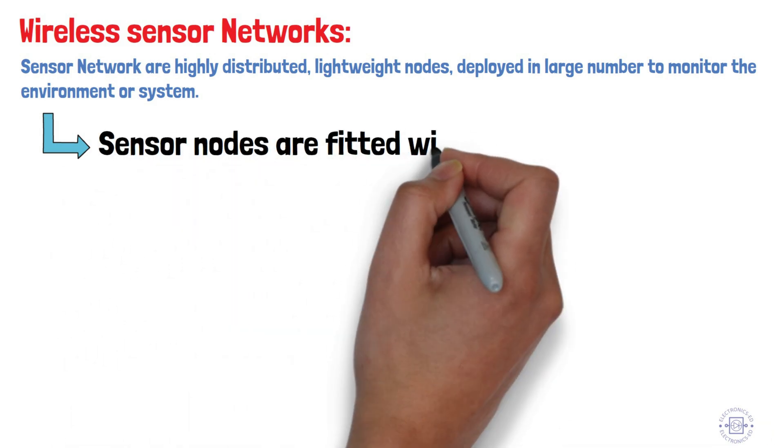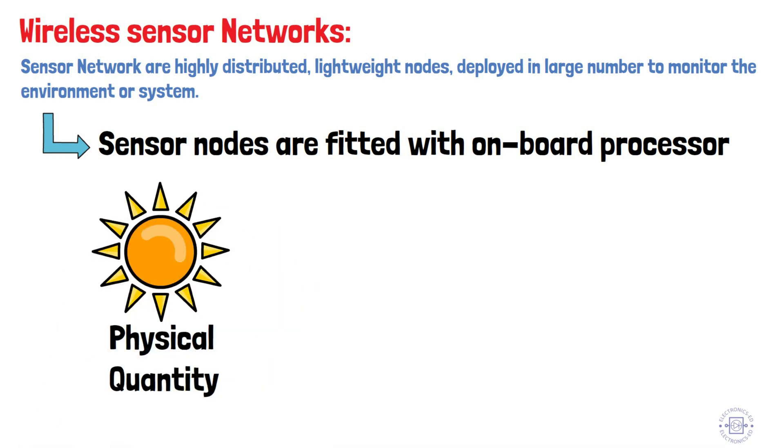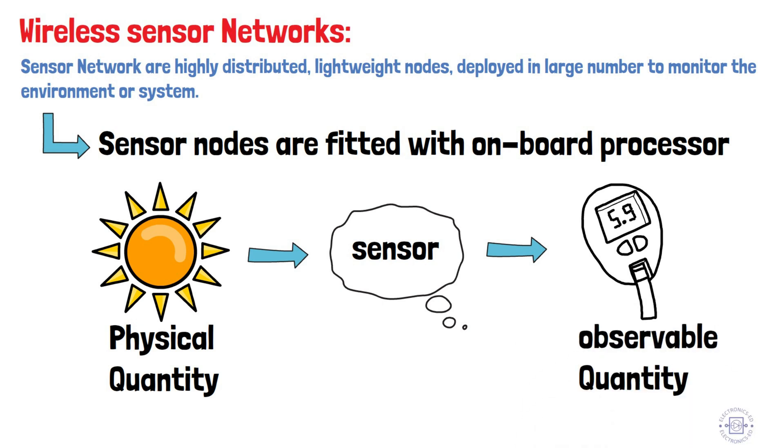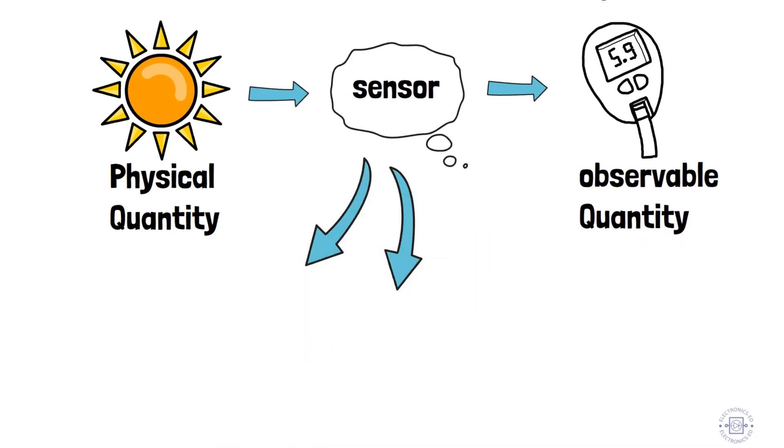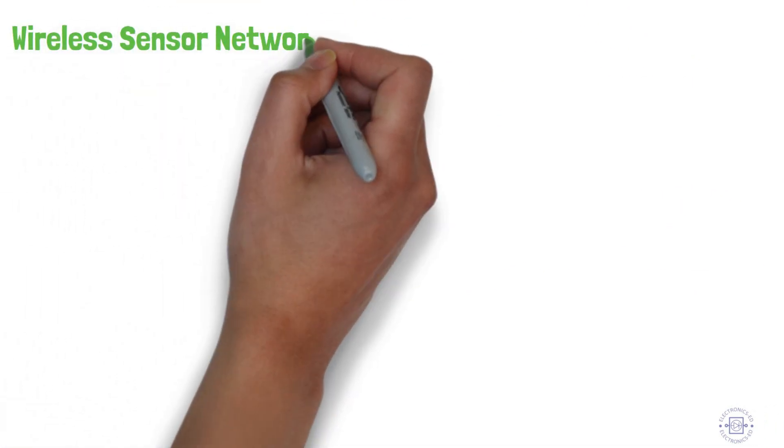Sensor nodes are fitted with onboard processors. Sensors take physical quantities as input and process them to give observable quantities. Sensors have three systems: sensor subsystem, processing system, and communication system. Now let's see the wireless sensor network diagram.